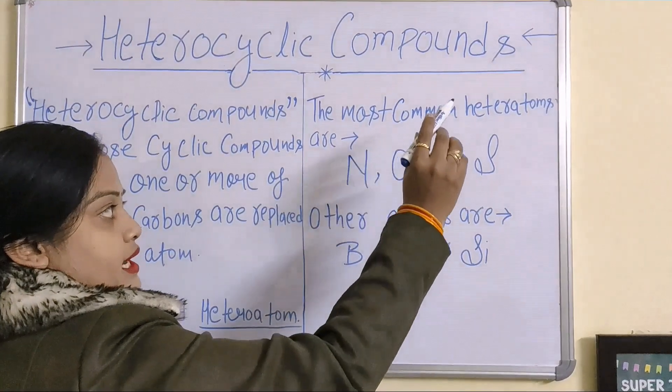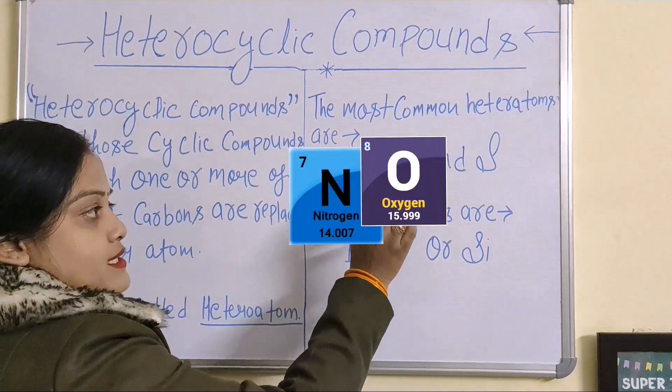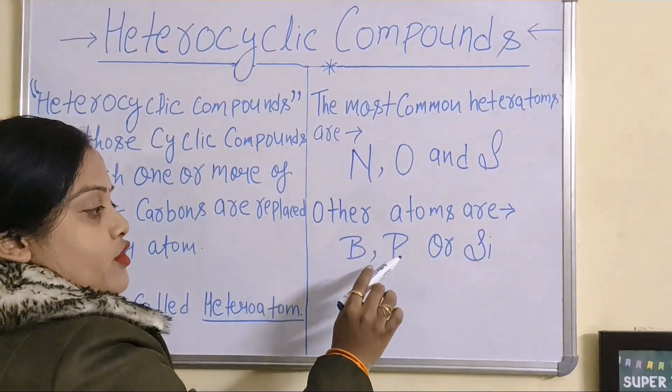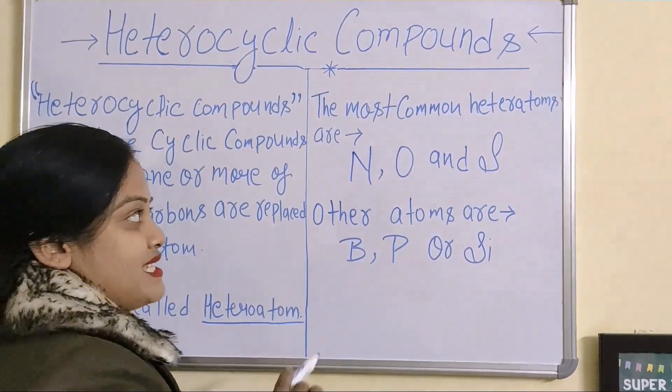The most common heteroatoms are nitrogen, oxygen and sulfur. And other atoms are boron, phosphorus and silicon.